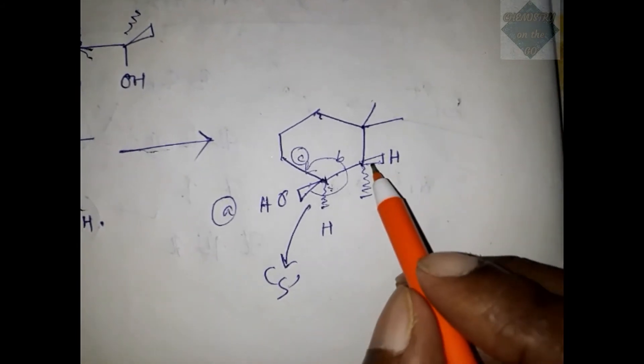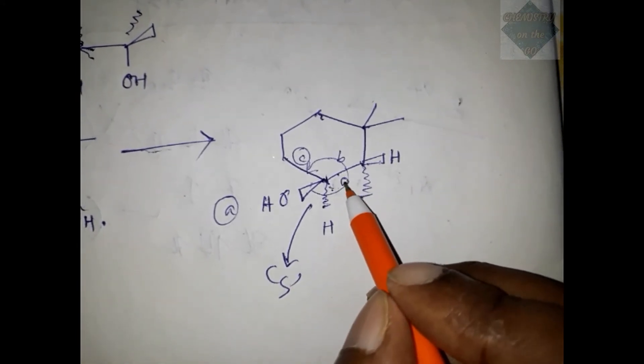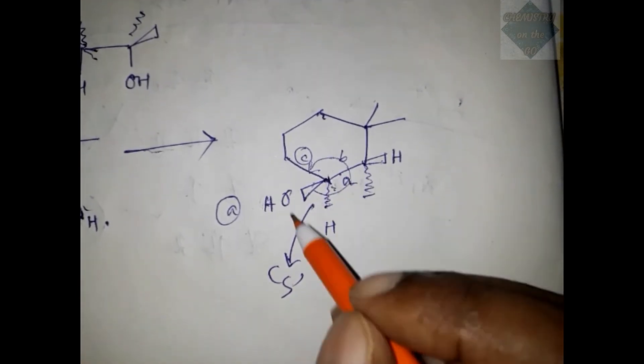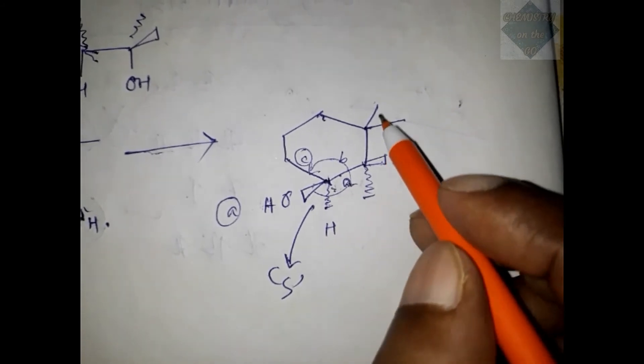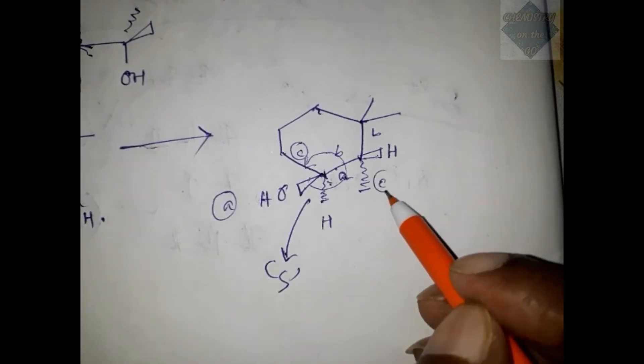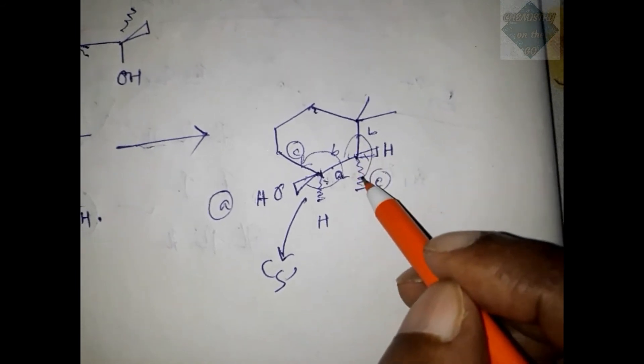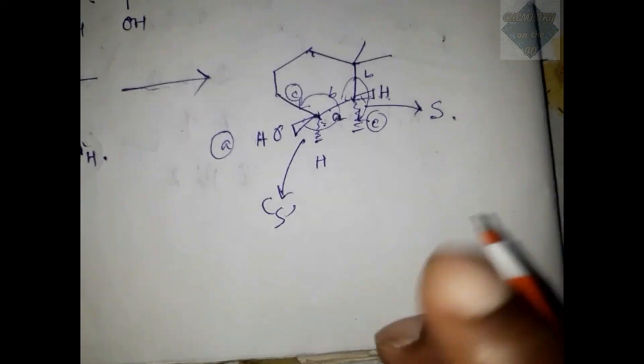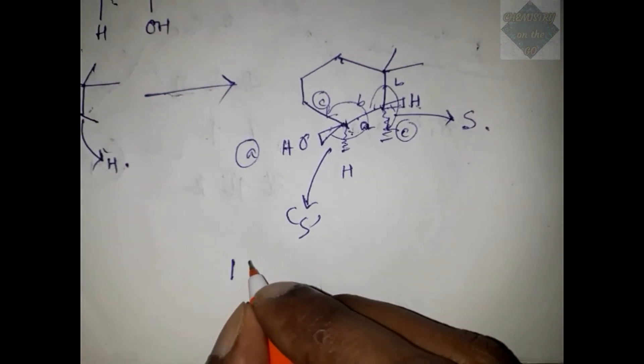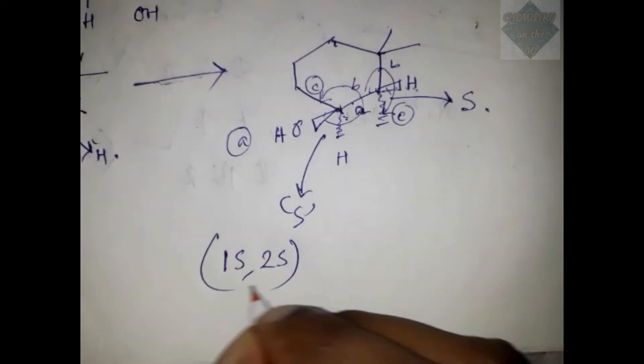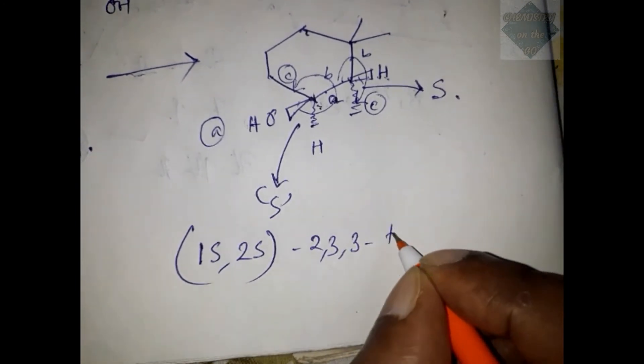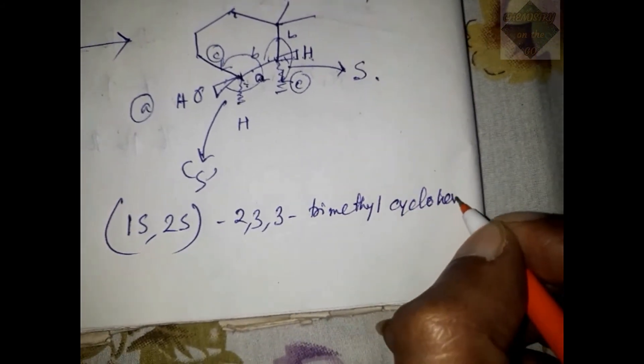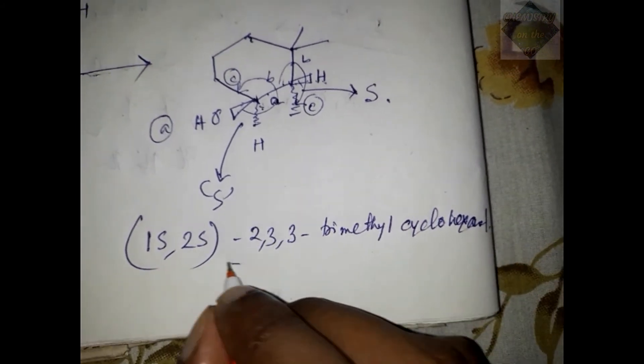Similarly, from this side, this one will be A as there is the OH. This side will be priority A, this side will be priority B, and the methyl will be priority C. So A, B, C—clockwise rotation, and hydrogen is in the near way, so this will also be S. So the structure will be (1S, 2S)-2,3,3-trimethylcyclohexanol.